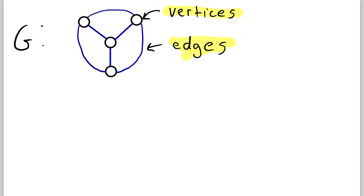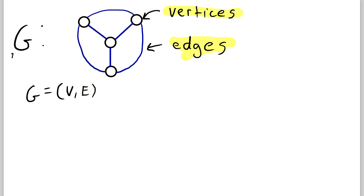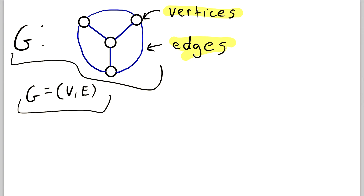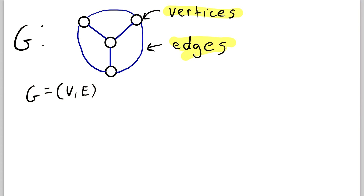What is a formal definition of a graph? A graph G is an ordered pair with some vertex set V and some edge set E. It's an ordered pair, so the vertex set comes first and the edge set comes second. If we wanted to write out this graph, we can't yet because we haven't labeled the vertices or edges — it's currently unlabeled. Without names for the vertices or edges, we can't write it out explicitly in this form.